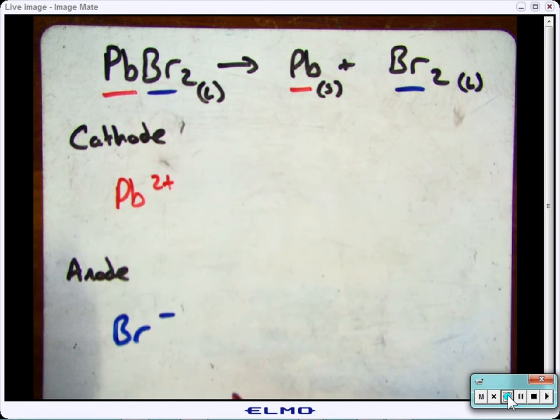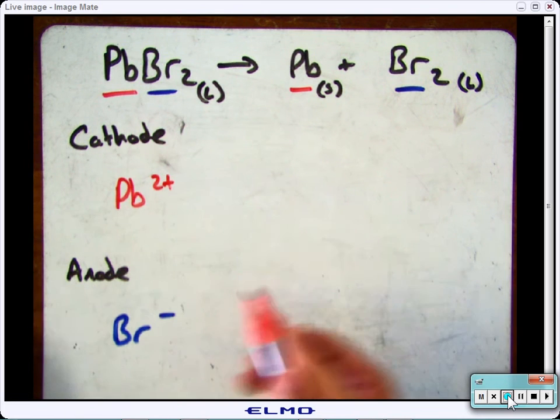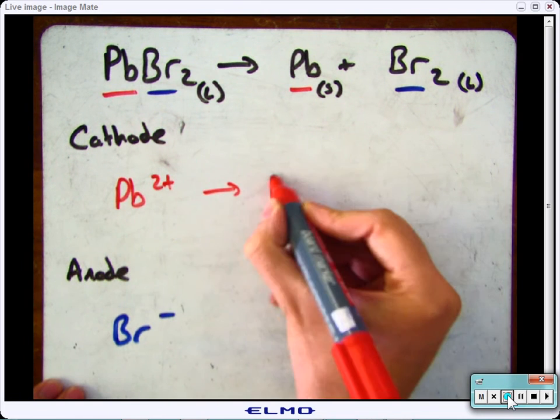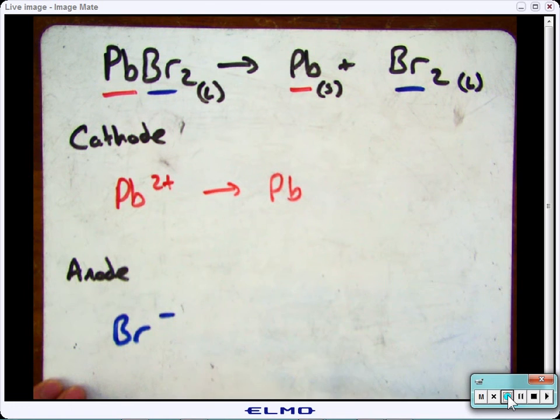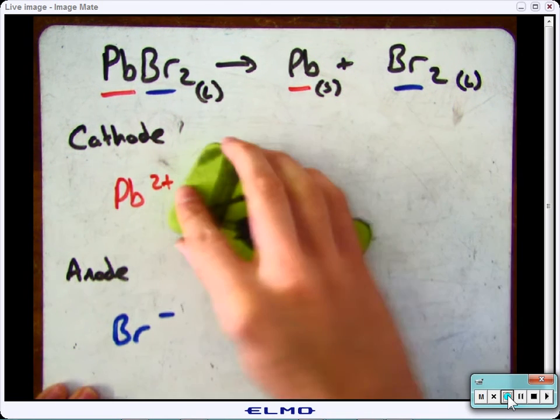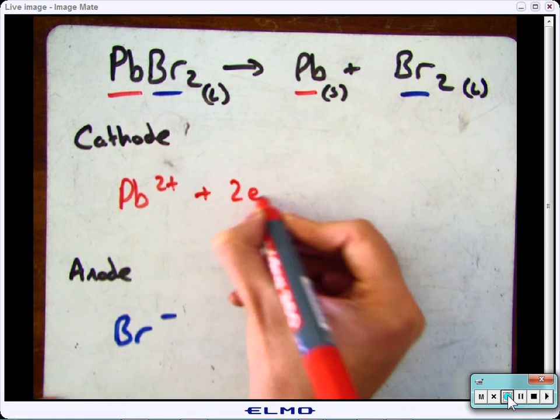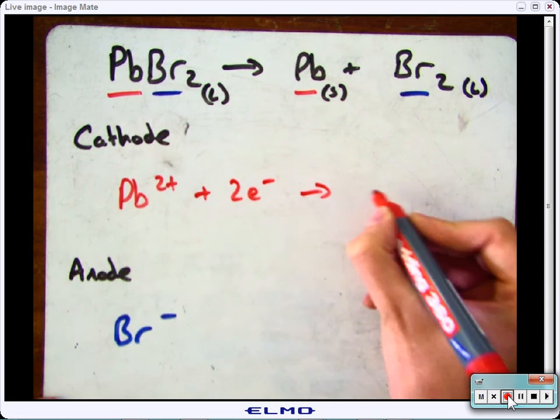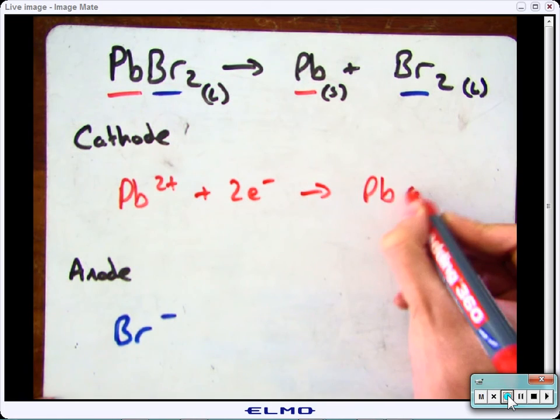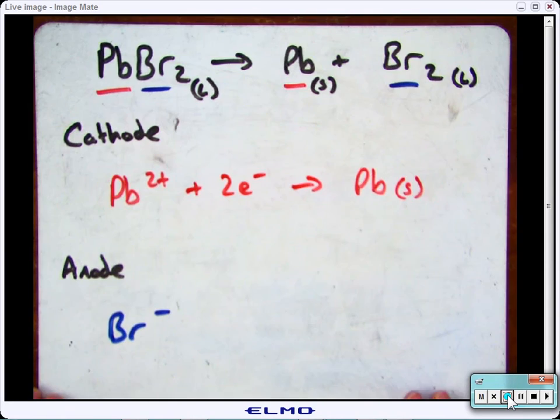So, lead is Pb2+, and bromine is Br-. To get lead, which has lost two electrons, back to normal lead, you need to add the electrons back. And because it's lost two, you need to add two electrons back to it. And that will give you solid lead back.